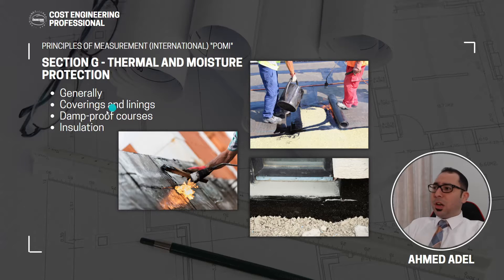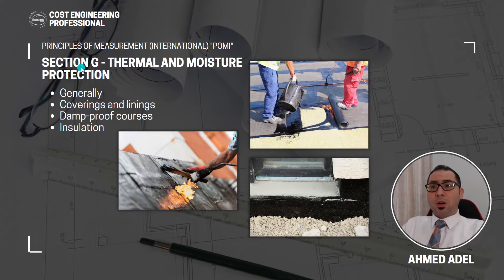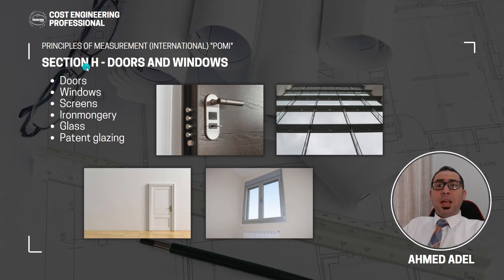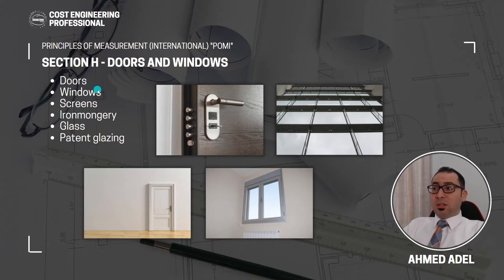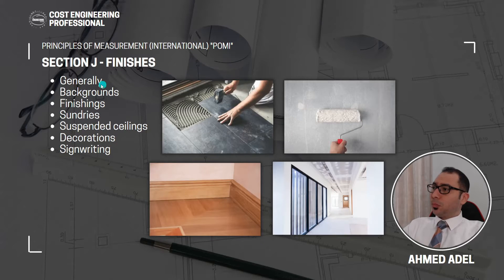Section G — Thermal and Moisture Protection. This covers coverings and linings, damp-proof course, insulation, and all types of waterproofing: roof waterproofing, substructure waterproofing, landscape area waterproofing, balcony and terrace waterproofing. Then Section H — Doors and Windows. From the name it is clear: doors, windows, screens, and their ironmongery are included, along with glass, patent glazing, and similar items.